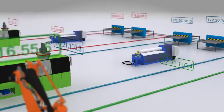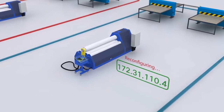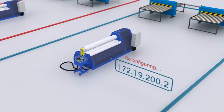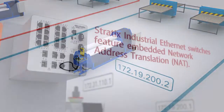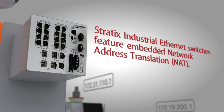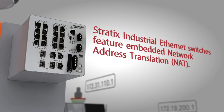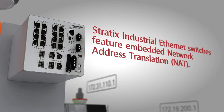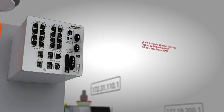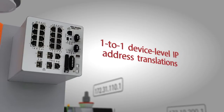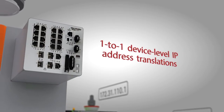When devices are moved from one cell to another, their IP addresses must be reconfigured, adding to this complexity. Stratix industrial Ethernet switches feature embedded network address translation, or NAT, capabilities that support one-to-one device-level IP address translations.